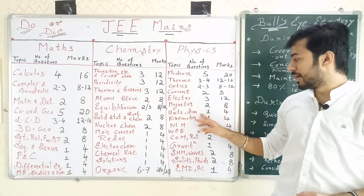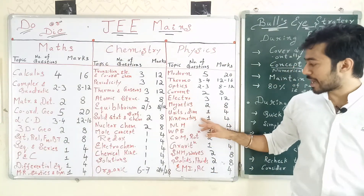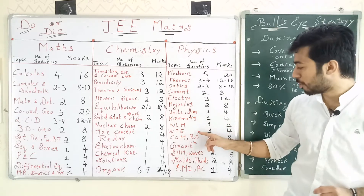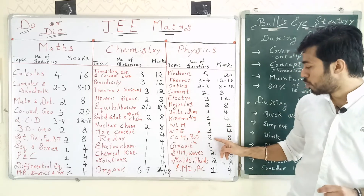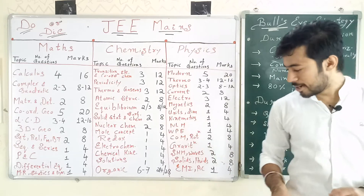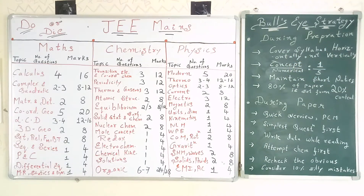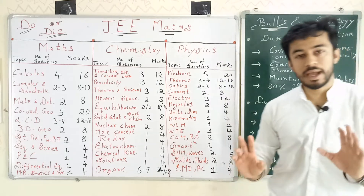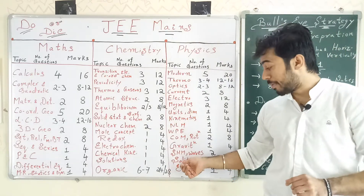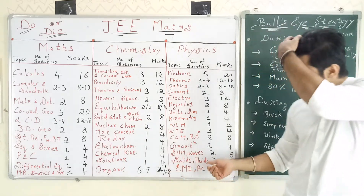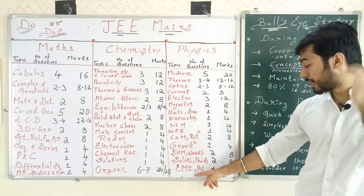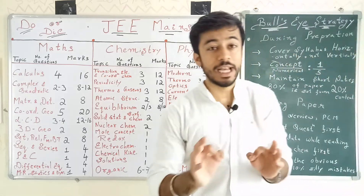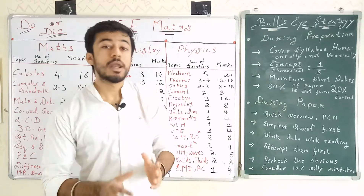Optics — 2 to 3 questions. Current Electricity — 2 questions, 8 marks. Electrostatics — 3 questions, 12 marks. Units & Dimensions and Kinematics — 1 question each. NLM, Work, Power, Energy — 1 question each. Rotation and Centre of Mass — 2 questions, 8 marks. Gravitation — 1 question, 4 marks. Solids and Fluids (Stress, Strain, Properties of Matter, Fluids) — 2 questions, 8 marks. EMI — 1 question, 4 marks. SHM and Waves — 2 questions, 8 marks.